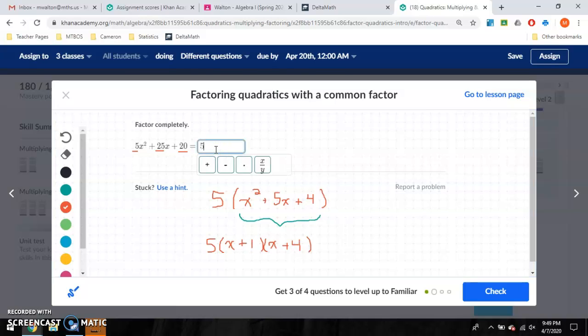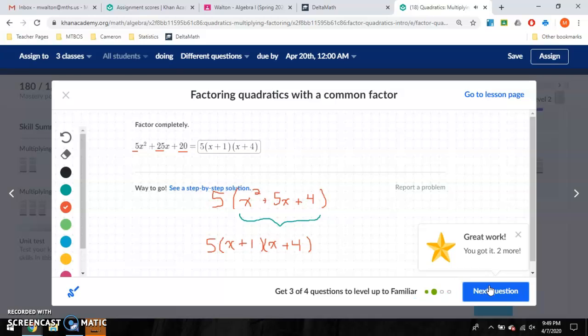And looking at this, my final answer, I have 5 times x plus 1, x plus 4. Does not matter what order you write those in. It's going to work out just the same. And sure enough, there you go.